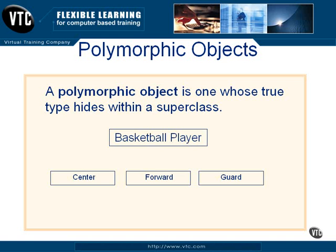However, when we're talking about the operation dribble-ball, that operation is the same for each of those subtypes. So when you're talking about the dribble-ball operation, you want to refer exclusively to the generalized class of basketball player. Then when the operation of dribble-ball is executed, the basketball player object will take on one of several forms.